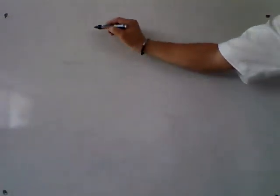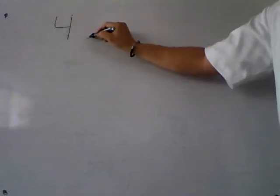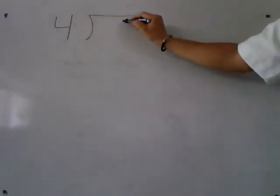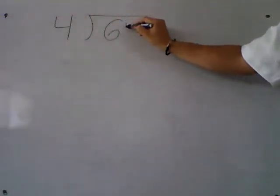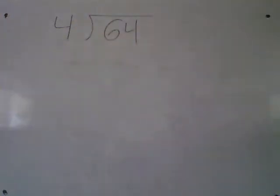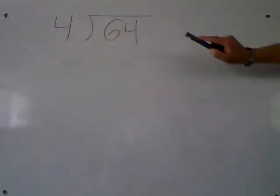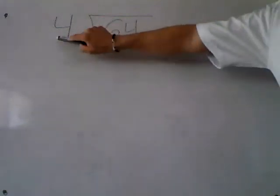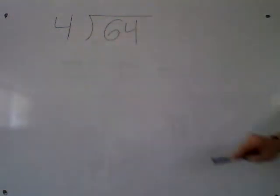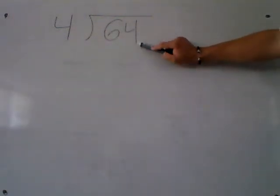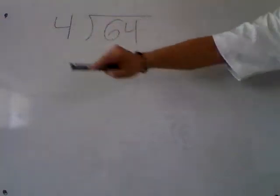Good morning kids. Now we are going to reinforce and practice division. Let's go with division number 1: 64 divided by 4. In this case, 64 is the dividend and 4 is the divisor. The dividend is always bigger than the divisor.